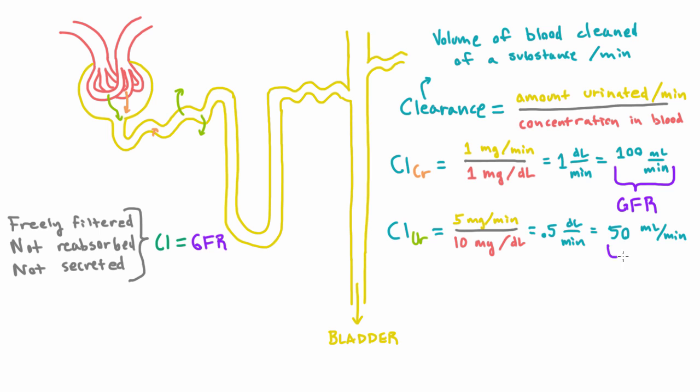And so what you'll notice is that this is less than GFR. The clearance of urea is less than the clearance of creatinine. And on an intuitive level, that makes sense. The reason is when you filter urea in the glomerulus, some of that gets reabsorbed. So not everything gets excreted. So because of that, you're clearing out your blood less efficiently than you would if none of it was reabsorbed.